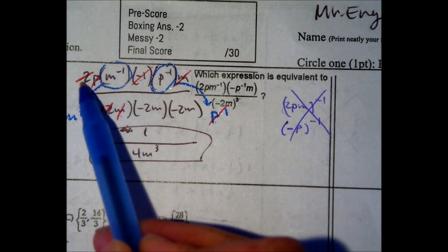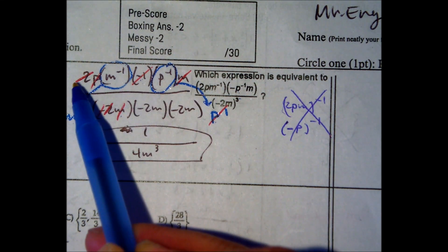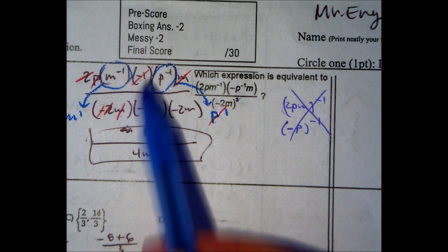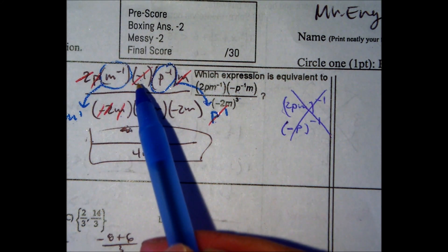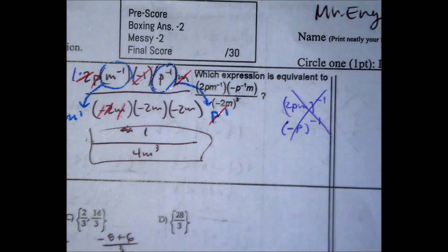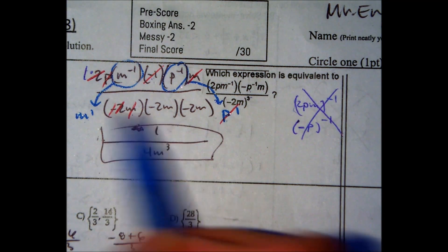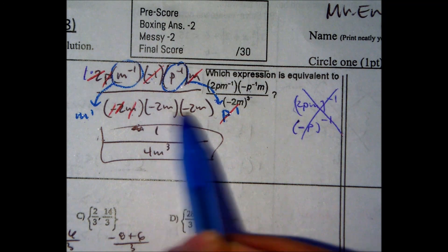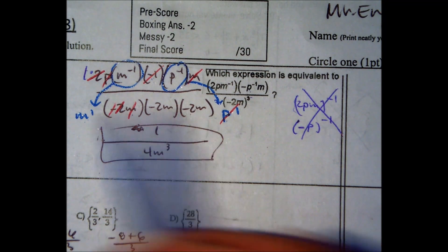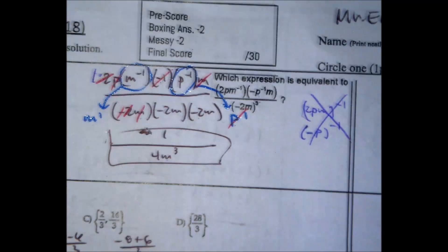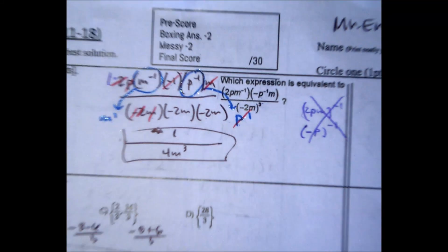The only thing left in the numerator is nothing. The common mistake is to write a 0 or make your denominator the numerator, which would be incorrect. There's a 1 up here. There's always a factor of 1. If I look at what's left in my denominator, I have negative 2 times negative 2 is 4, and then M times M times M gives me M to the third. 1 over 4M to the third power is your answer, and that would be letter choice A.